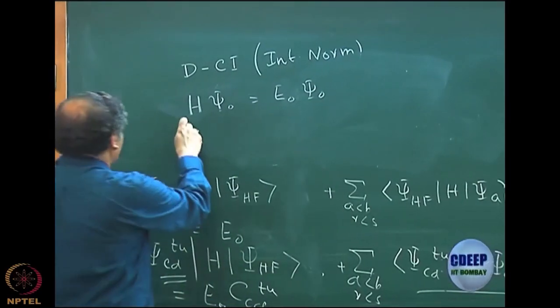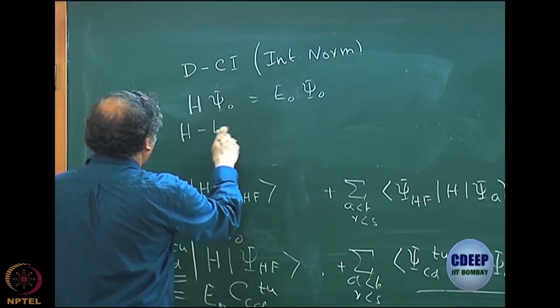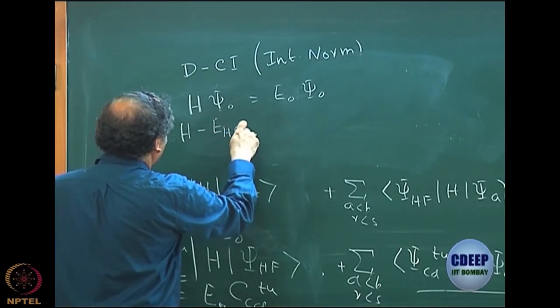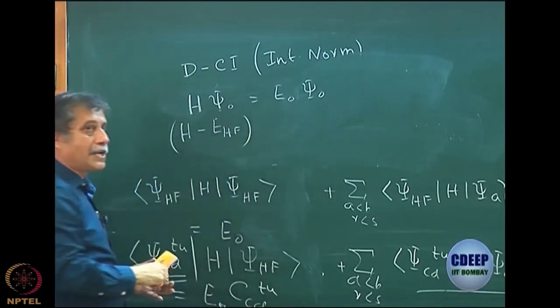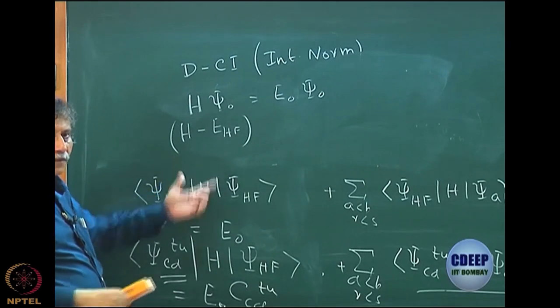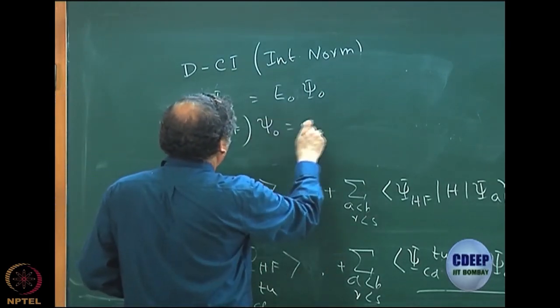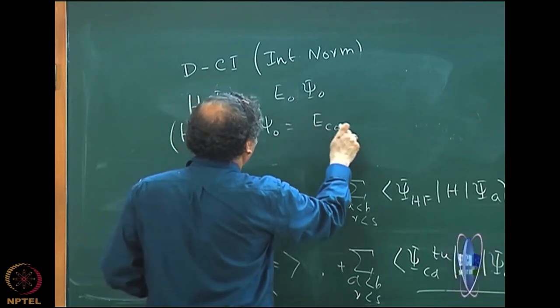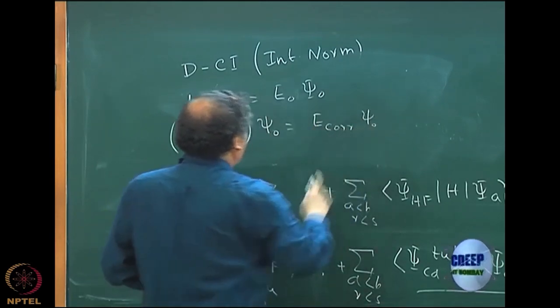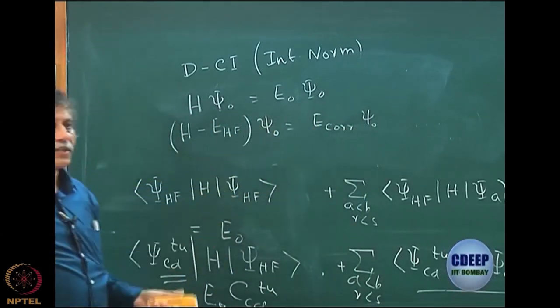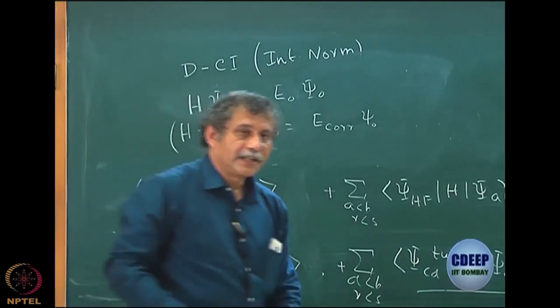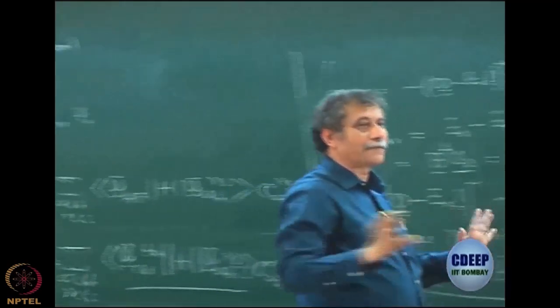Let me write the Schrodinger equation by subtracting from H the E Hartree-Fock. This is a number. So I define a new operator H minus E Hartree-Fock, write psi0 and this becomes my E correlation psi0, correct? Because I subtract from the right hand side also E Hartree-Fock.